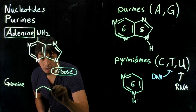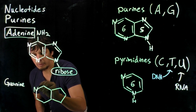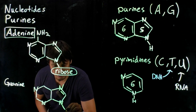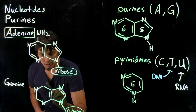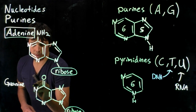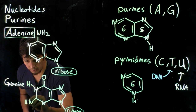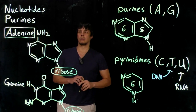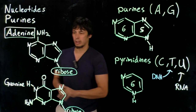For guanine, we draw the fused bicyclic system. This nitrogen connects to the ribose. On guanine, we have a carbonyl group here and an amine group here. Notice — I missed a double bond — there we go. That's guanine.